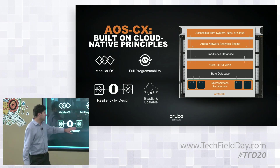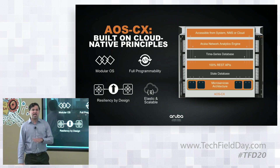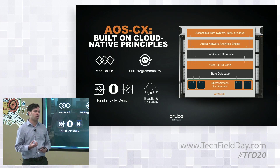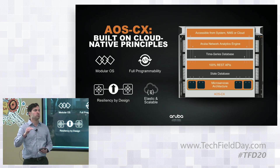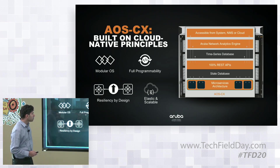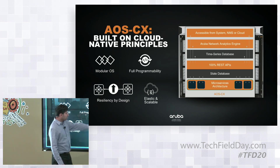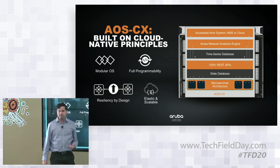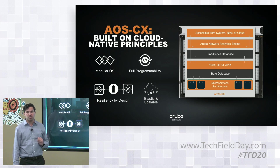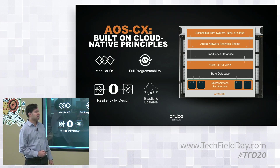Finally, elasticity and scalability. The elasticity of AOS CX can be understood from the fact that we have a single cloud native operating system which runs from your edge access to your aggregation, to your core, to your data center — one OS runs everywhere. This strong software foundation helps us to be innovative and gives us tremendous feature velocity, which will be depicted in the next slide.